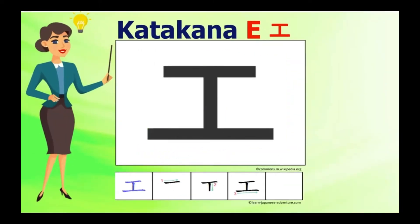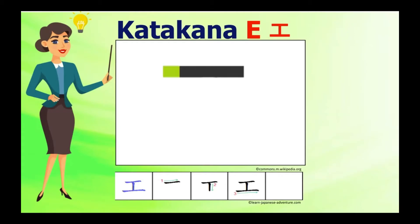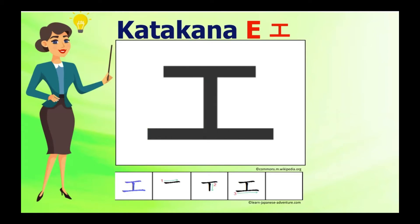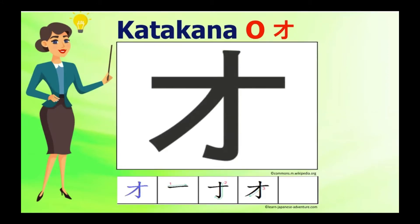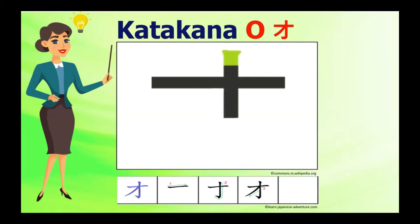Katakana E is pronounced as 'e'. When writing, stroke number three should be twice longer than stroke number one. Pay attention with E — it resembles the capital I of the Roman alphabet. Katakana O is pronounced as 'o'. Make sure not to make stroke number three too long.